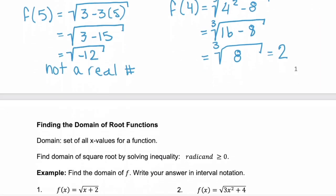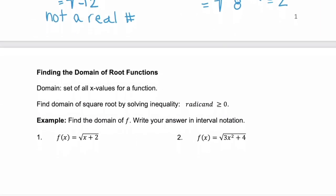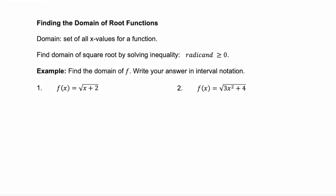Let's move on to page 2. Finding the domain of root functions. Now remember that the domain are the set of all x values for a function. And to find the domain of a square root is pretty easy. You just solve this inequality. The radicand has to be greater than or equal to 0. Right? Because we can't take the square root of a negative. It has to be 0 or larger. So we're taking our radicand and solving the inequality.